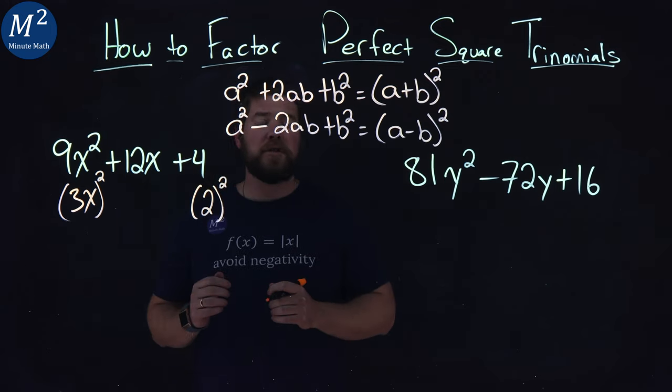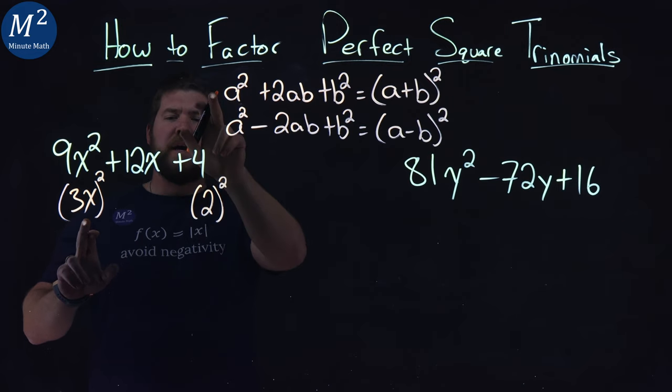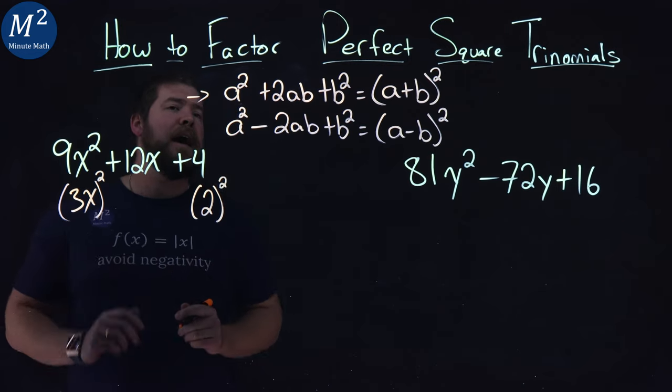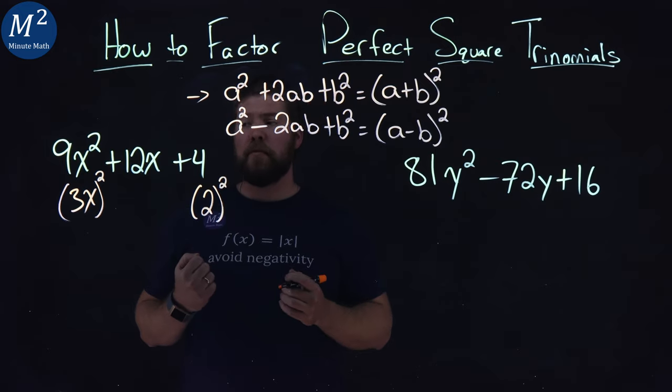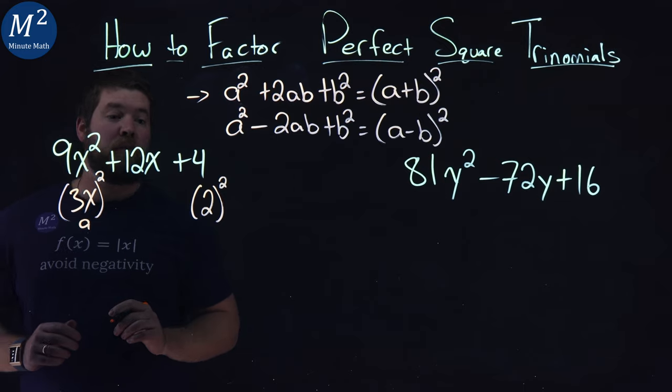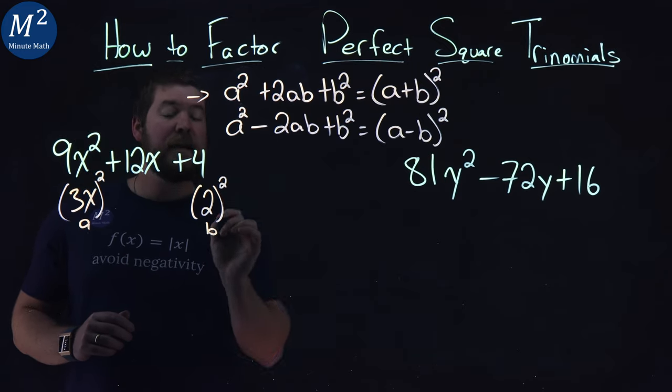Now, the last thing we want to check - if we look at our form, it looks like a² + 2ab + b². Let's see if we can rewrite it in this form. We clearly have an a value of 3x and a b value of 2.